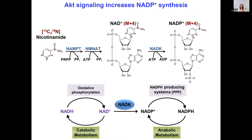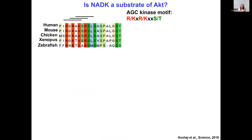To test this, we first looked at the sequence of NAD kinase and observed that in the N-terminus sequence, we found three overlapping sequences for the AGC kinase motif. The AGC kinase motif is a serine or threonine in the first position, flanked by basophilic residues at the minus three or minus five position, shown here by arginine or lysine. There are three overlapping AGC kinase motif sequences, and AKT is one of them.